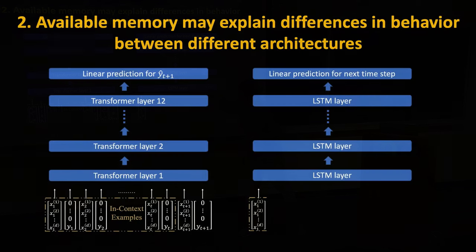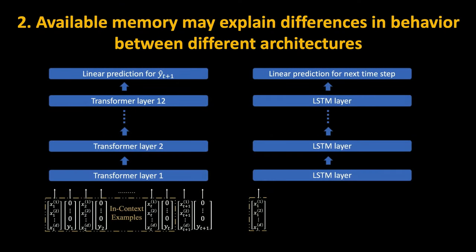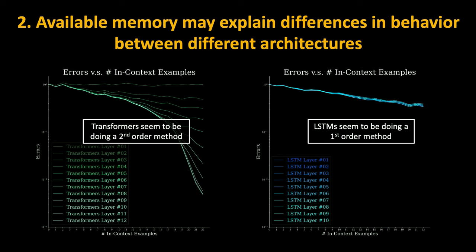It seems like maybe memory could explain differences between architectures. On one hand, we have transformers, which have the entire sequence available in context and can process all examples together. On the other hand, recurrent architectures like LSTMs process examples one at a time, which seems to limit what they can do. Transformers seem to prefer doing a second-order method for this problem, whereas a recurrent architecture like LSTM seems much more like a first-order method. Perhaps the underlying memory or information available to them could explain what algorithms they actually learn from data.